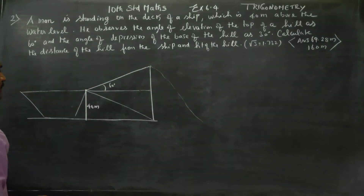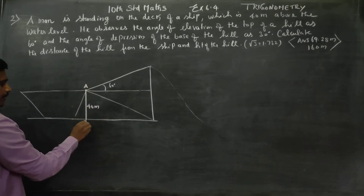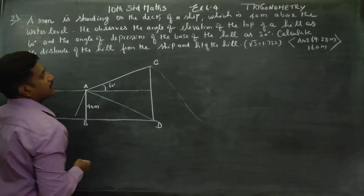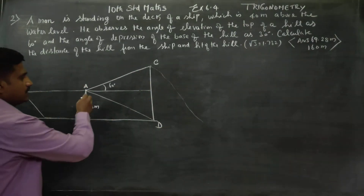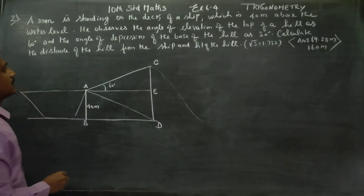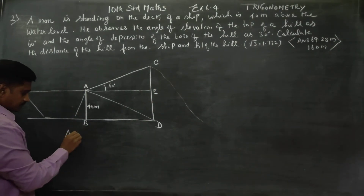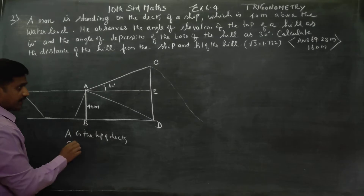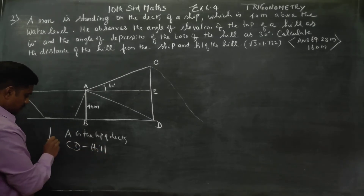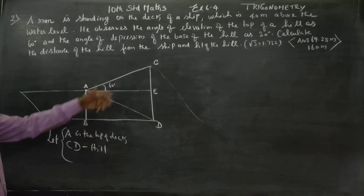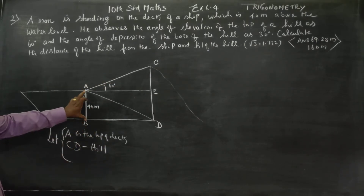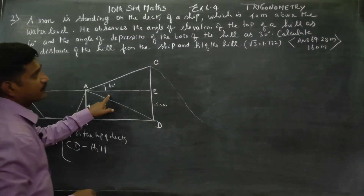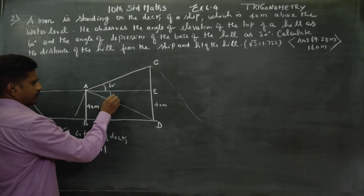You can see the top of the hill here. If you have a mountain or a hill, it will be E. A is the top of the deck, and CD is the hill. The angle of depression is 30 degrees.